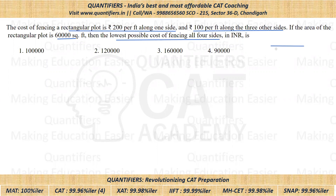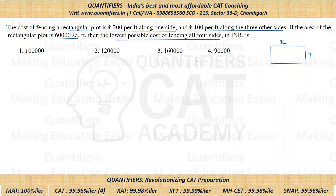I'm assuming the sides of the rectangle as X and Y. No need to draw the figure in the exam, but just for the sake of making you understand, I've drawn a rectangle having sides X and Y. So one of the sides has a cost of 200 per feet, which would be 200 times X. And the remaining three sides would be X plus 2Y.